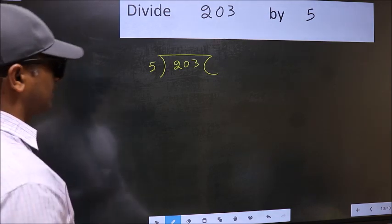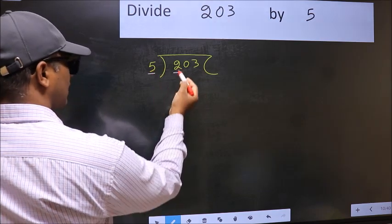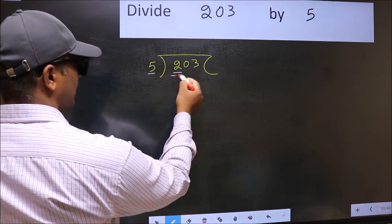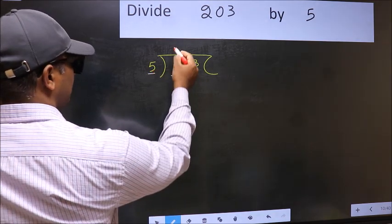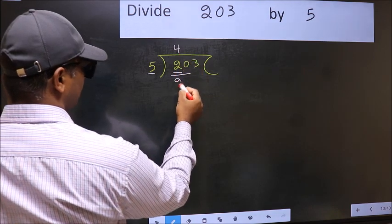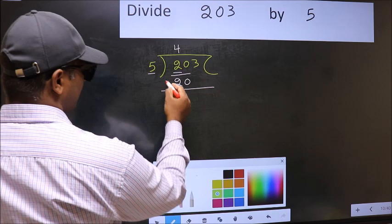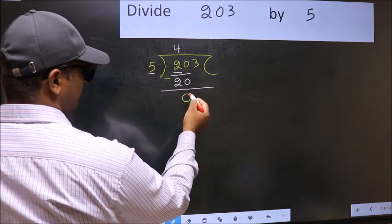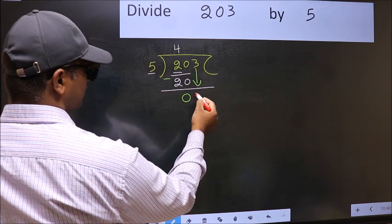Next, here we have 2 and here 5. 2 is smaller than 5, so we should take two numbers: 20. When do we get 20 in the 5 table? 5 times 4 is 20. Now you should subtract: 20 minus 20 is 0. After this, bring down the next number, so 3 down.